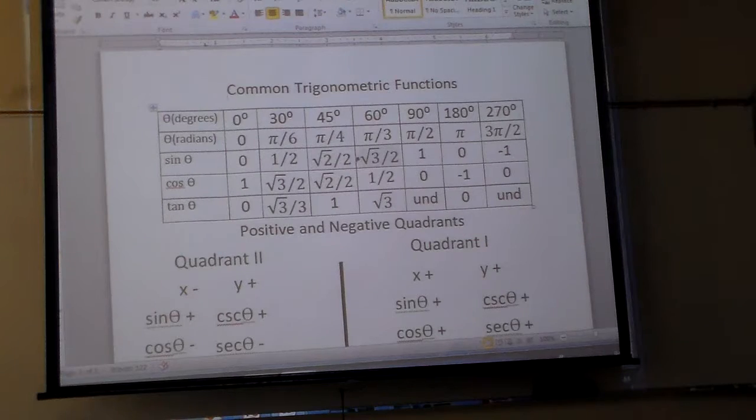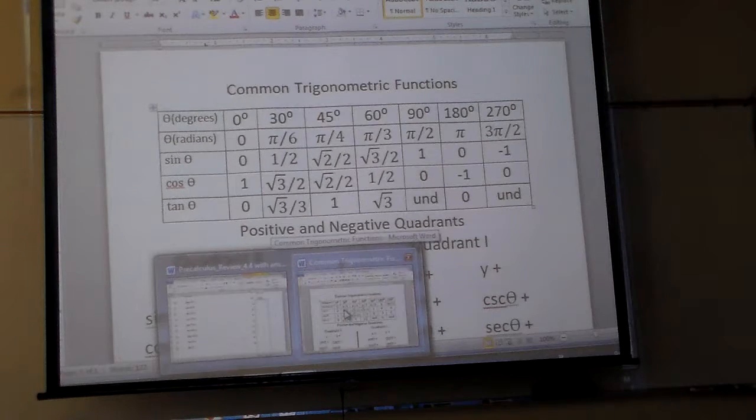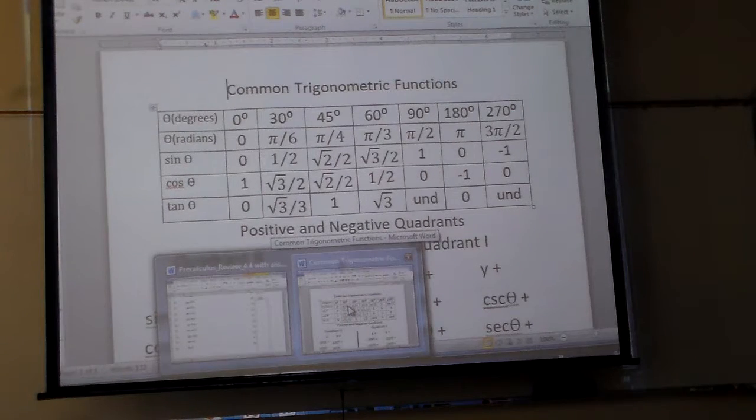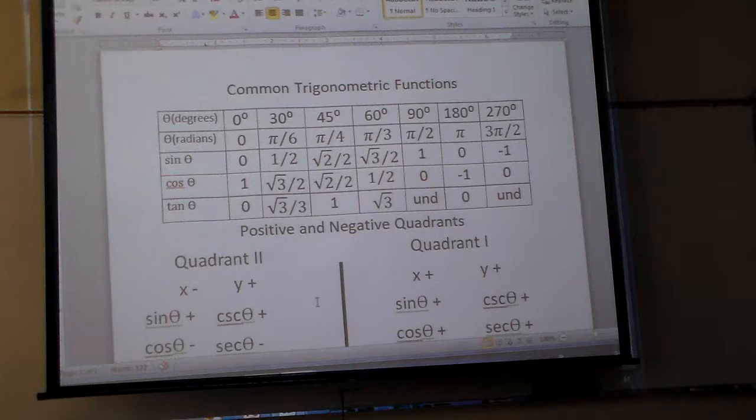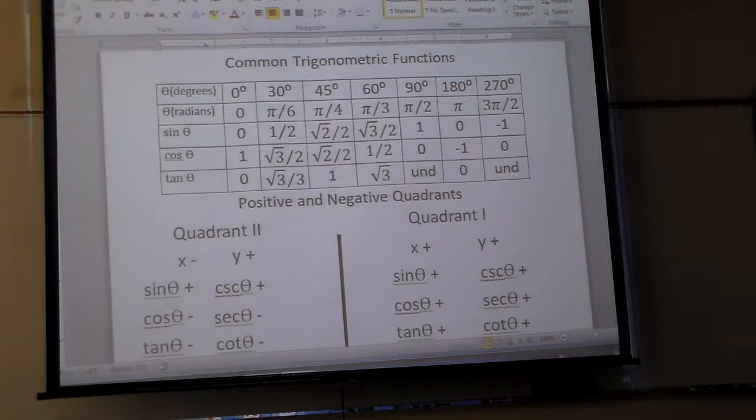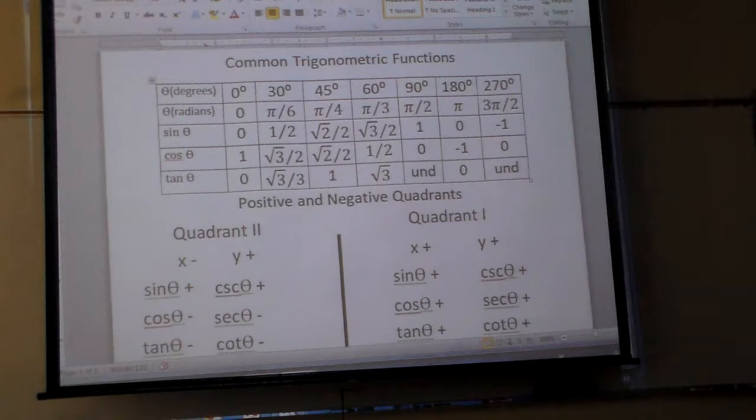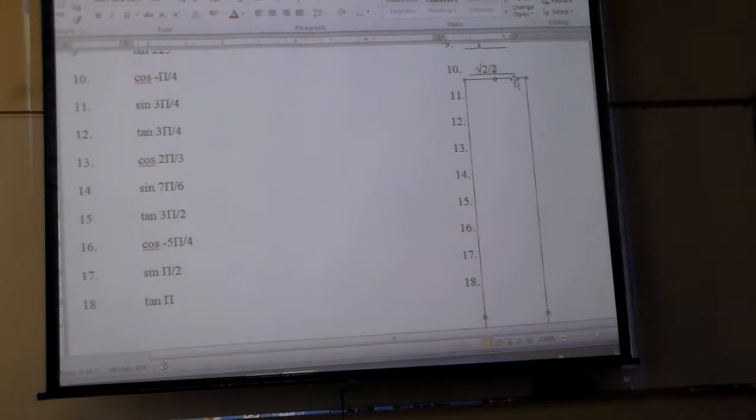Sine at π over 4 is what? Square root of 2 over 2. Only... I forgot what angle we're looking for. 3π over 4, right? Where is 3π over 4? What quadrant? 2. Is it in quadrant 2? And what is sine in quadrant 2? Positive. So it's positive square root of 2 over 2.